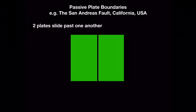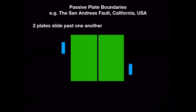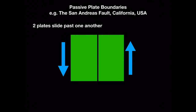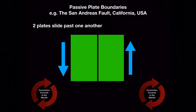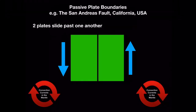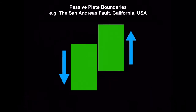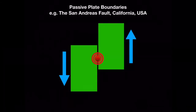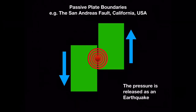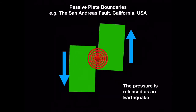Earthquakes can also occur at passive or transform boundaries, where two tectonic plates slide or grind past one another. Once again, plate movement is driven by convection currents in the mantle. As the two plates slide past one another, they may become locked together. Over time, pressure and tension may build up. When this is released and the plates finally move, an earthquake occurs along the fault line.